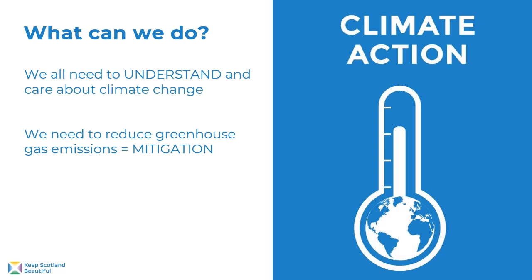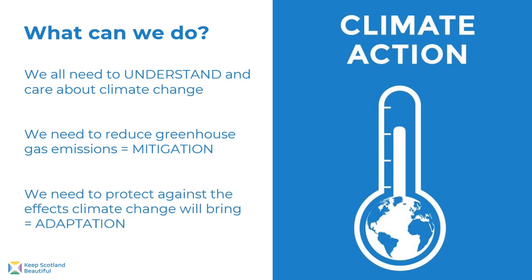The next thing we need to do is reduce greenhouse gas emissions, also known as mitigation. The aim of this is to reduce the effects of climate change by having less greenhouse gases in the atmosphere. We also need to protect against the effects climate change will bring — this is known as adaptation. We are already feeling some of the effects of climate change and we know there are more to come, but there are things we can do to reduce the impacts.